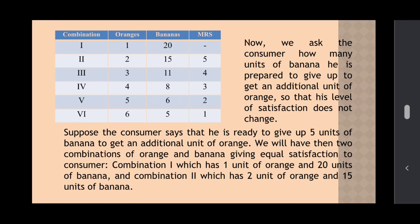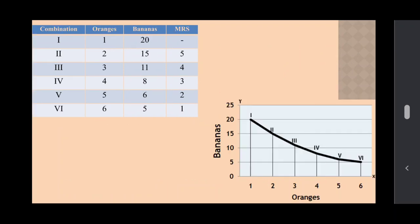And this is nothing but the indifference curve. Now if we draw the above schedule into a figure, we will get the indifference curve. Look at the figure — the x-axis shows quantity of oranges, the y-axis shows quantity of bananas. If we plot the schedule in the figure, we will get the indifference curve, which is downward sloping as shown in the figure.